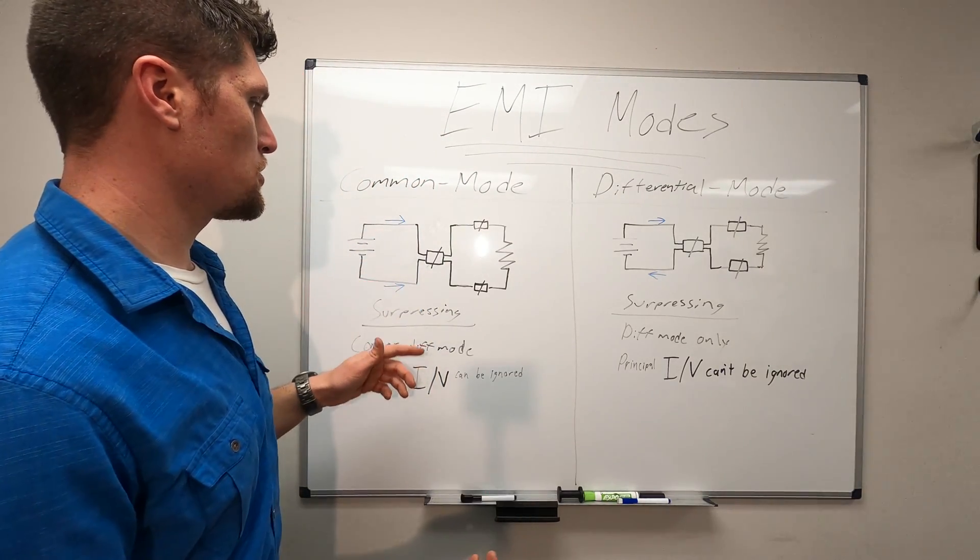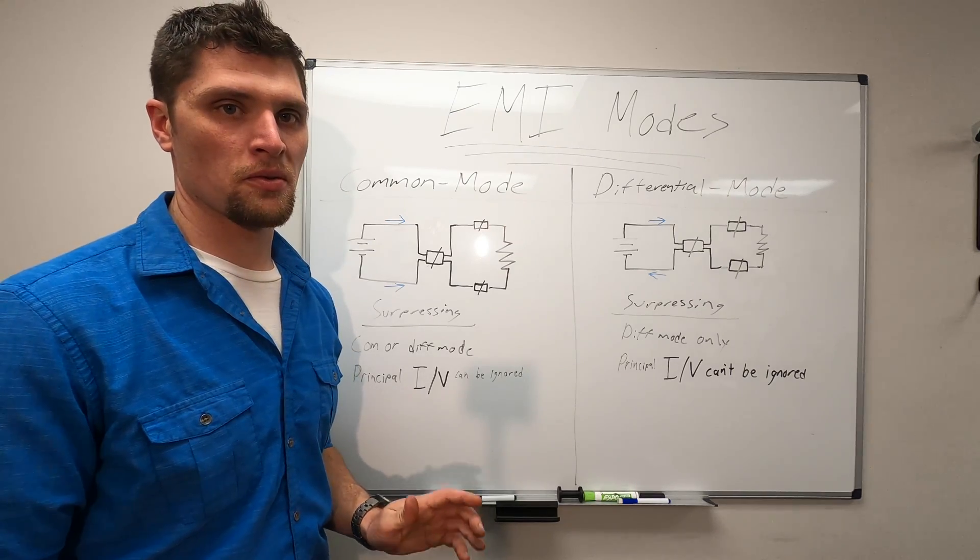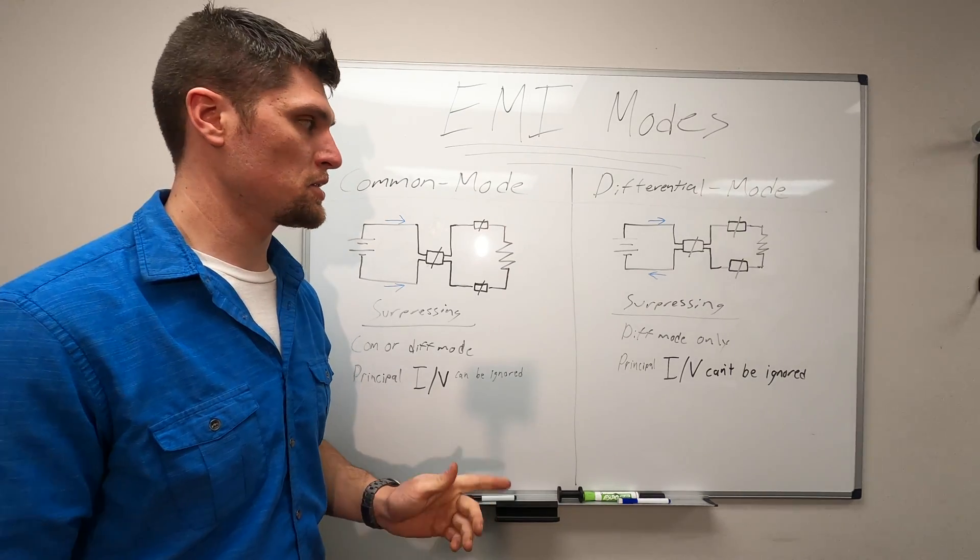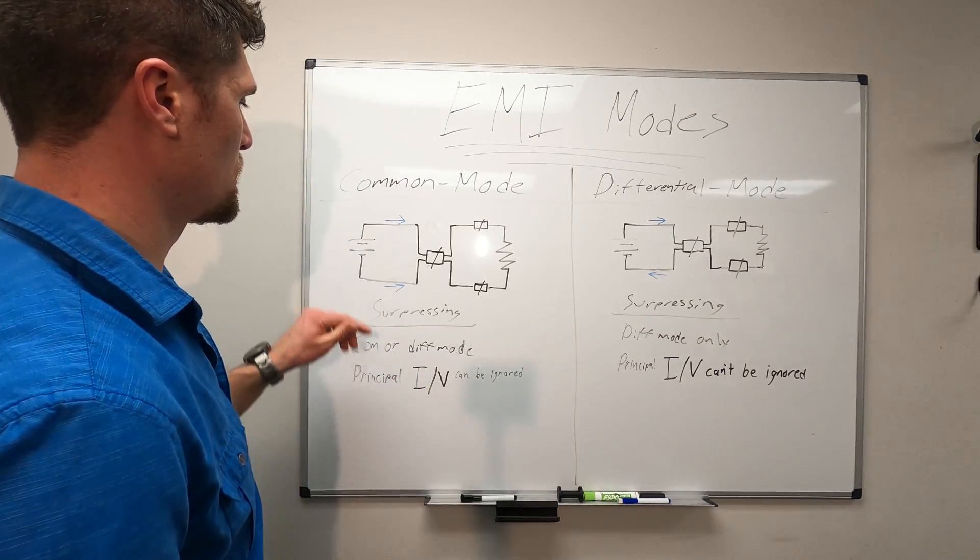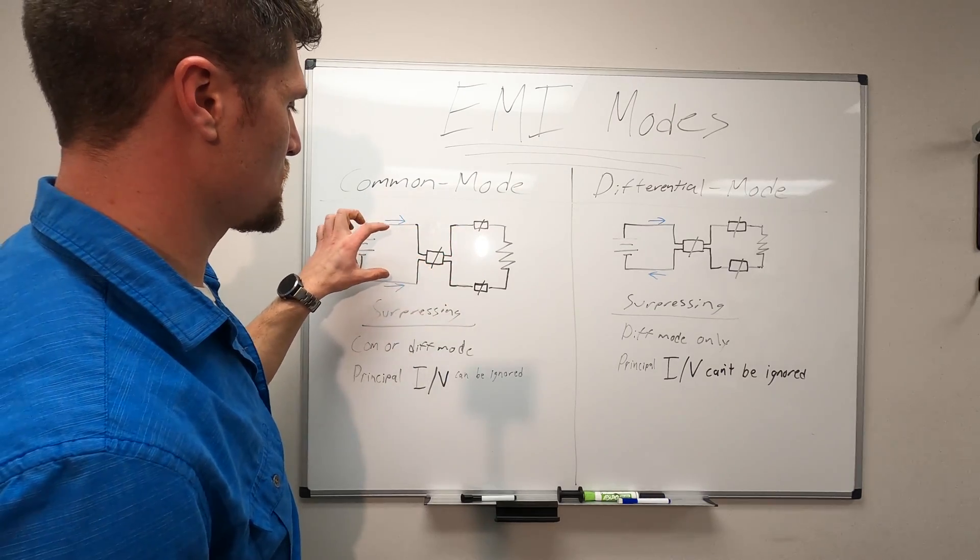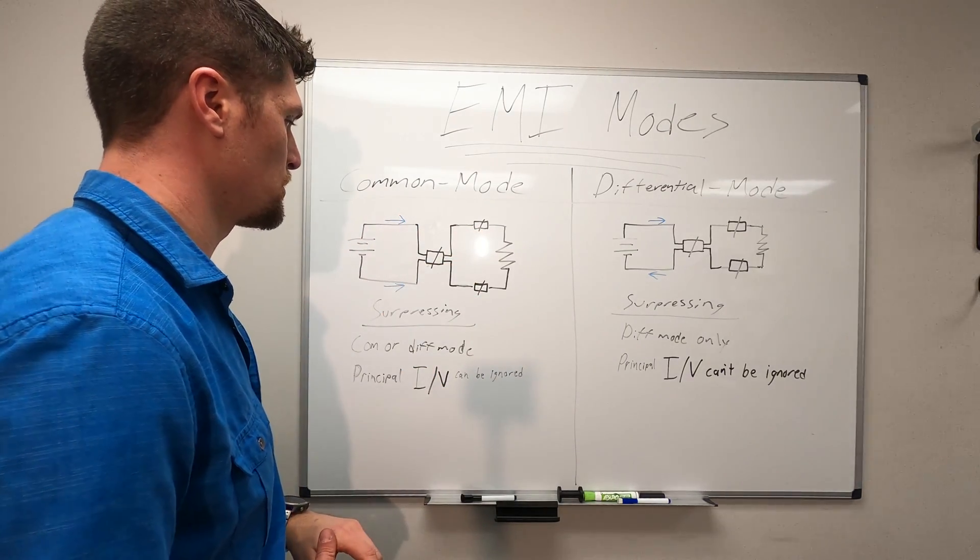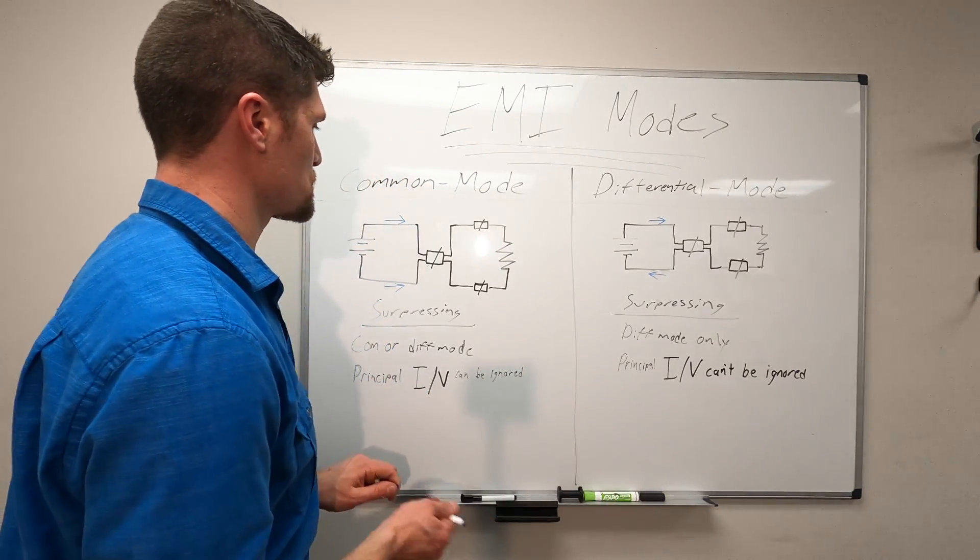Now let's take a look at how these ferrite suppression devices are actually working to suppress EMI in these two different modes. Starting off with common mode. Since EMI is conducted in the same direction down both lines heading towards our load, we have three devices in this circuit.